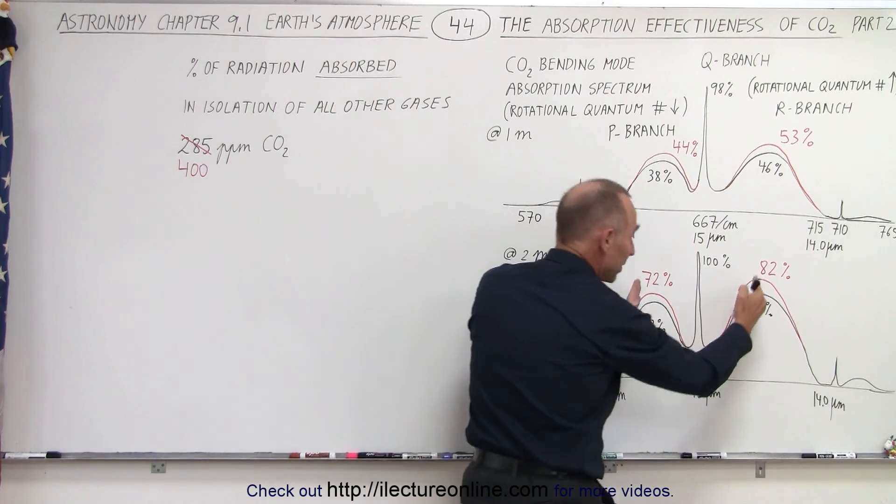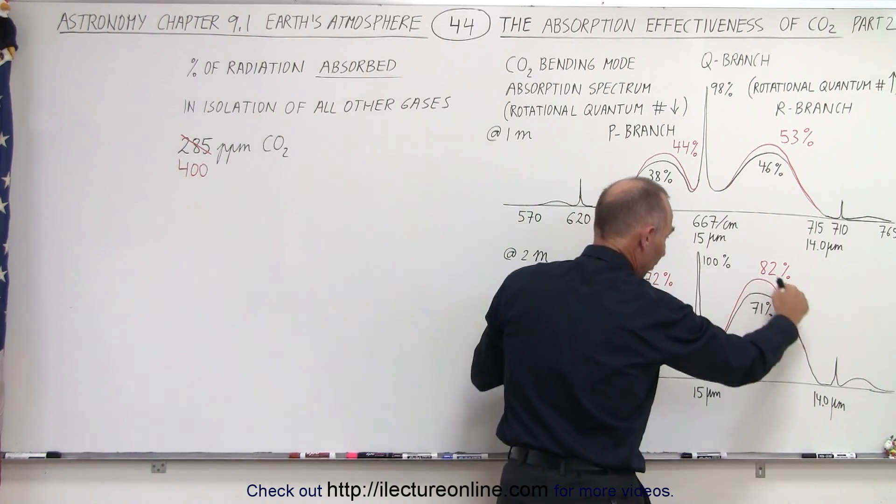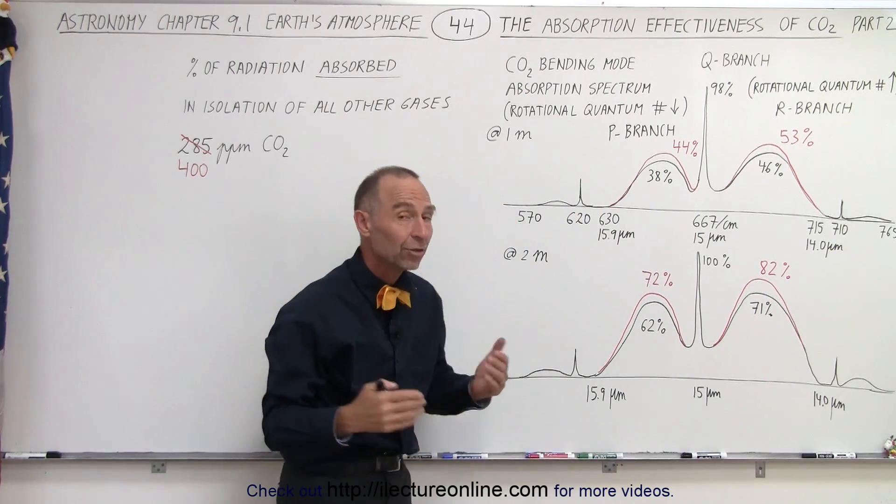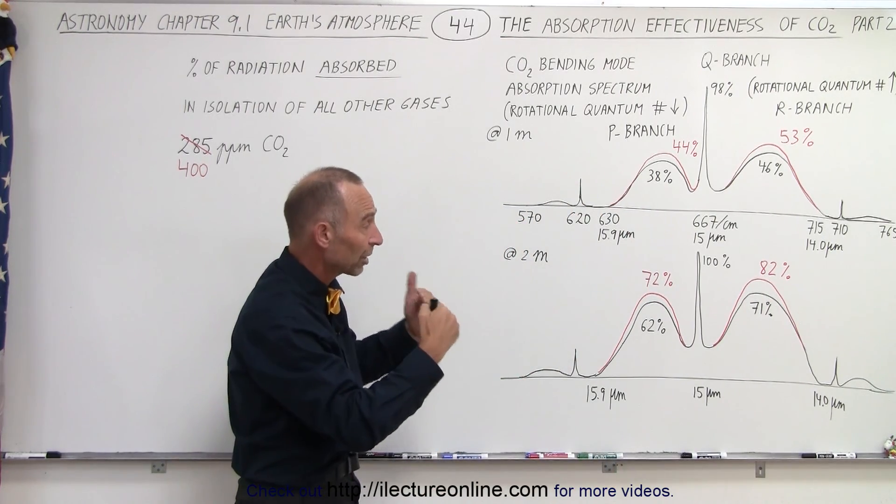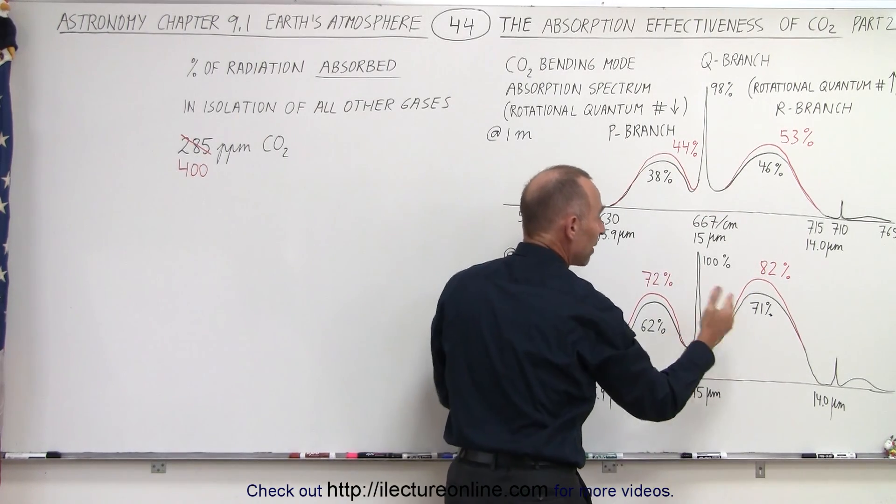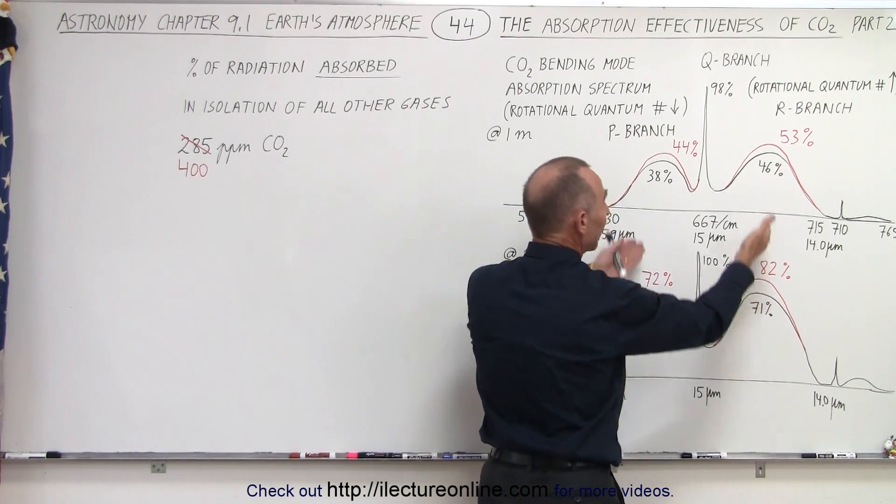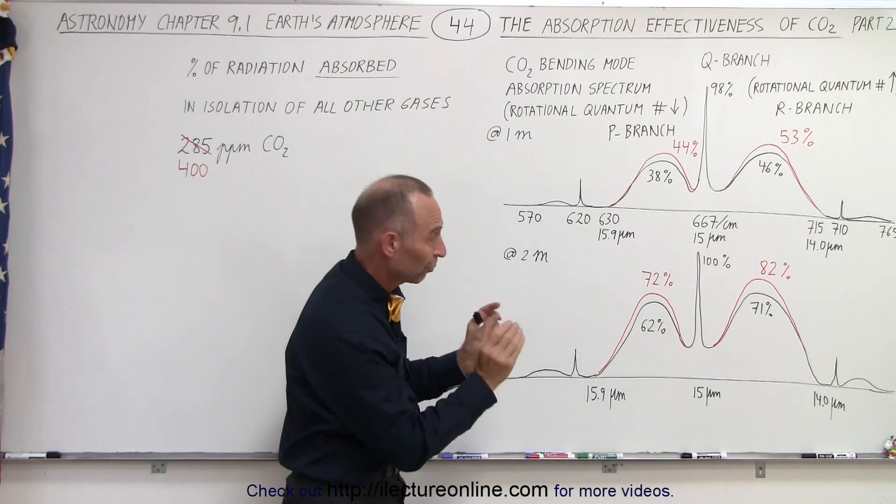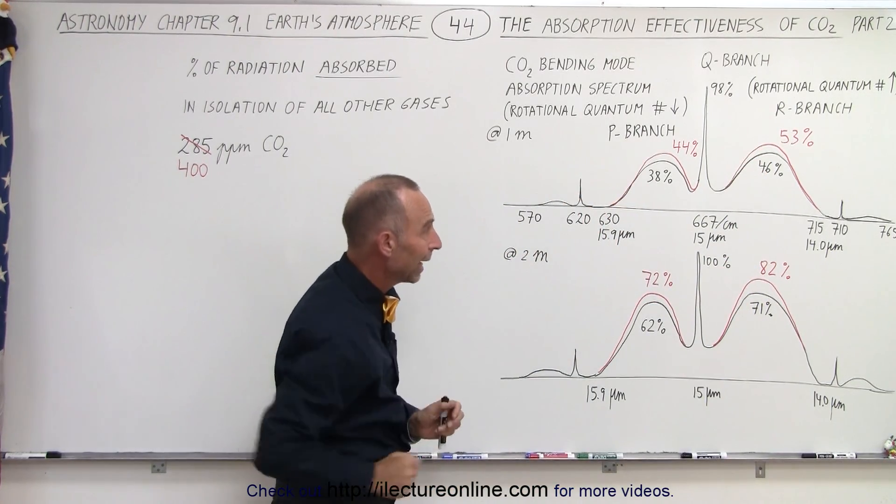Now, of course, that's only for the peak areas. The numbers are far lower to either side of those two side lobe peaks. But again, you can see that the additional carbon dioxide in the atmosphere does indeed have an appreciable effect in the amount of radiation absorbed by the time we reach a height of one meter and a height of two meters above the surface, especially for the peaks of the P and the R branch.